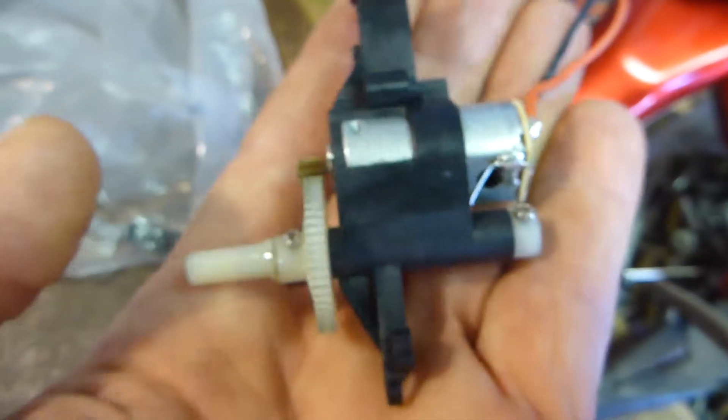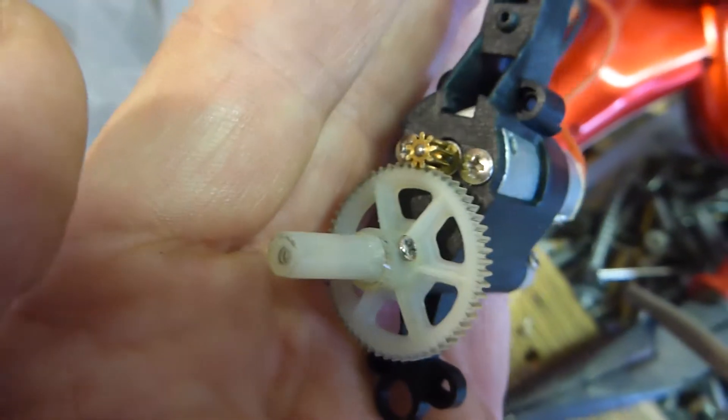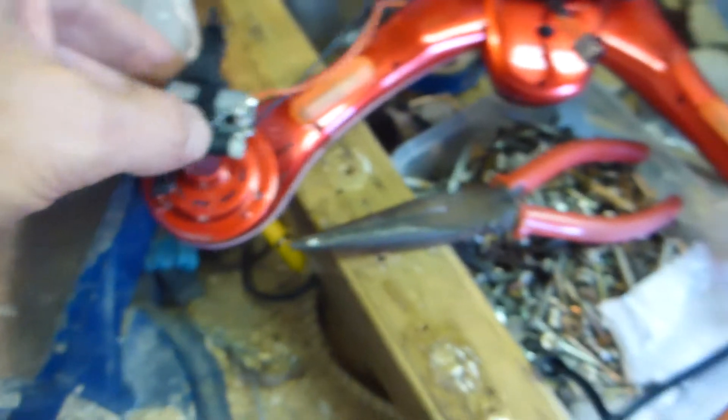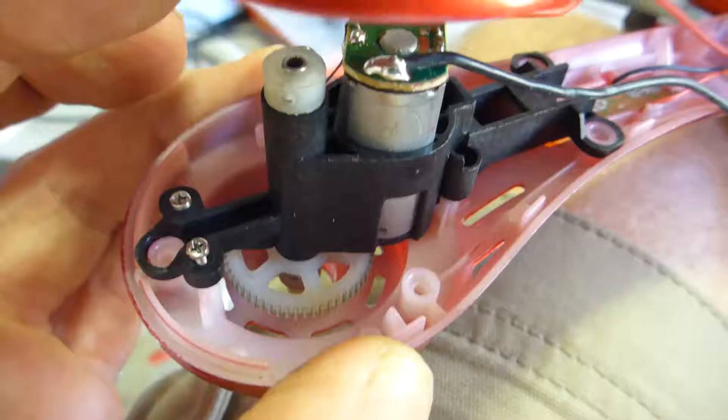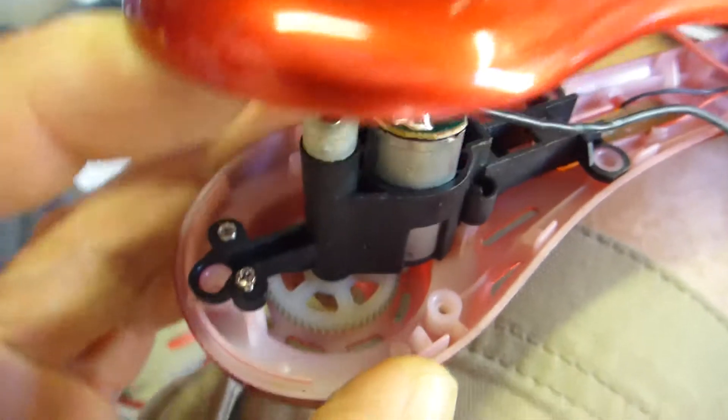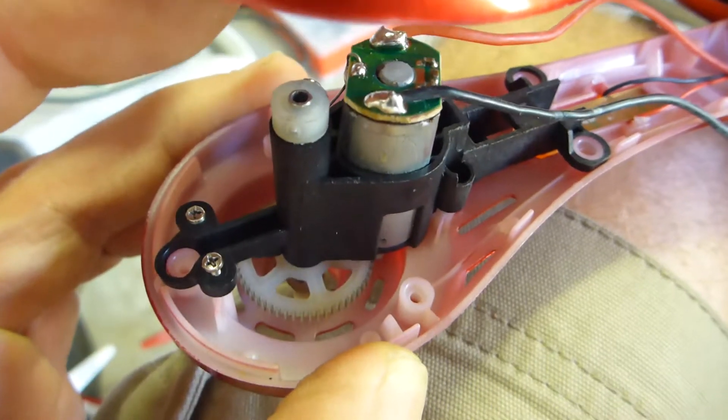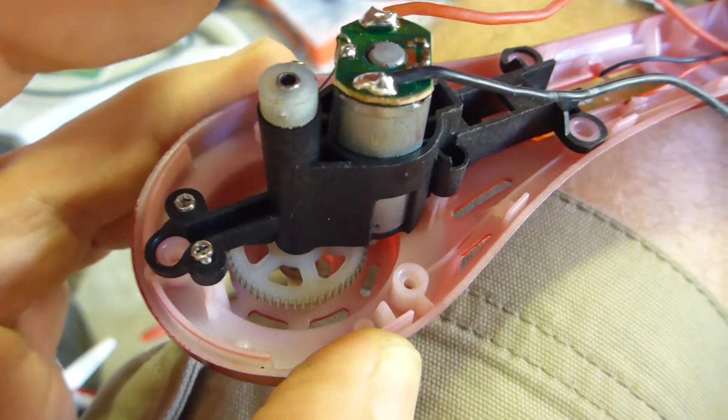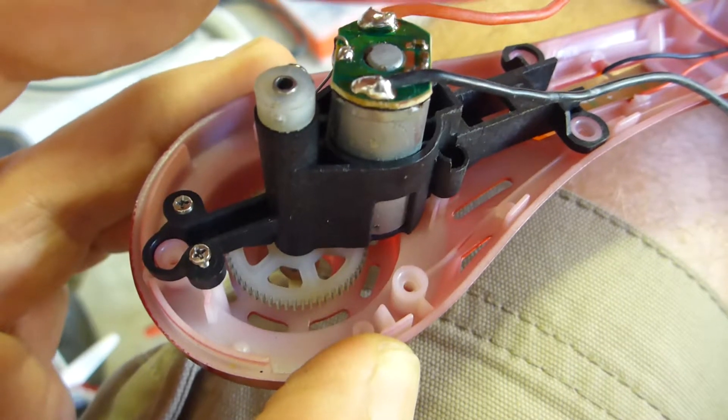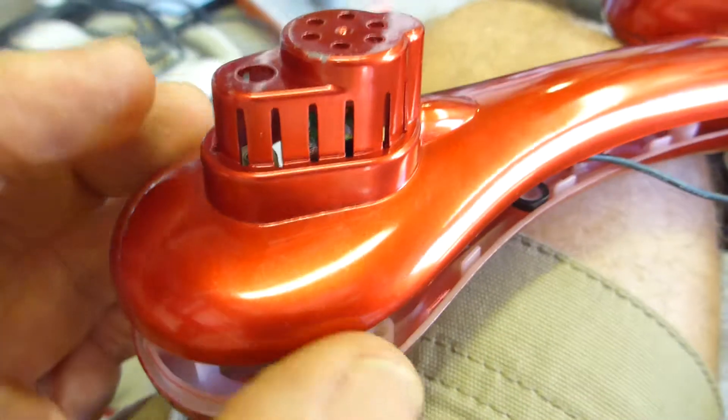That gear set's been reassembled, just got to put it back in the quadcopter body and put the whole thing back together, let it dry and take it for a flight. Just be aware that these little screws here, there are four of them, keep them separate from the other screws because they're shorter and don't over tighten them because you'll almost certainly strip the threads.